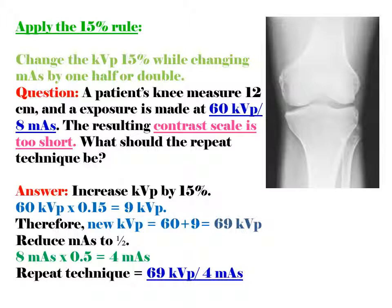Answer: Increase KVP by 15%. 60 KVP multiplied by 0.15 equals 9 KVP. Therefore, new KVP = 60 plus 9 = 69 KVP. Then reduce MAS to one half: 8 MAS multiplied by 0.5 equals 4 MAS. The repeat technique is 69 KVP, 4 MAS.